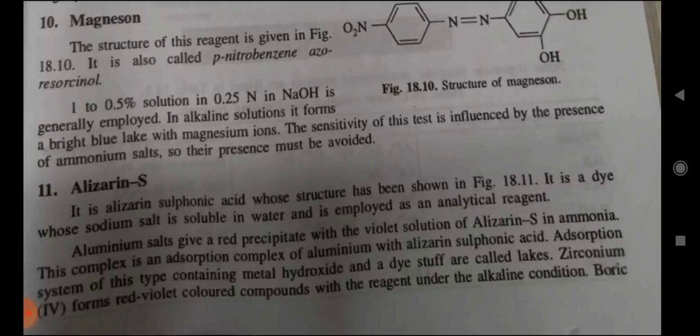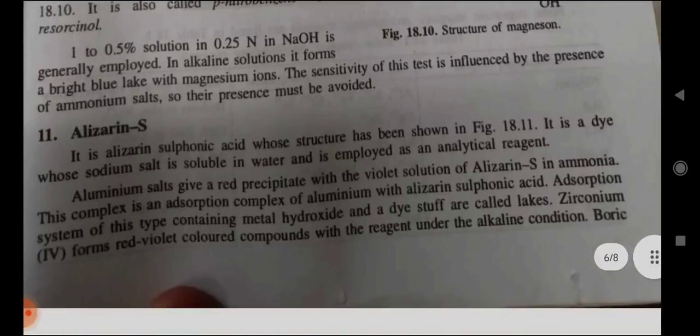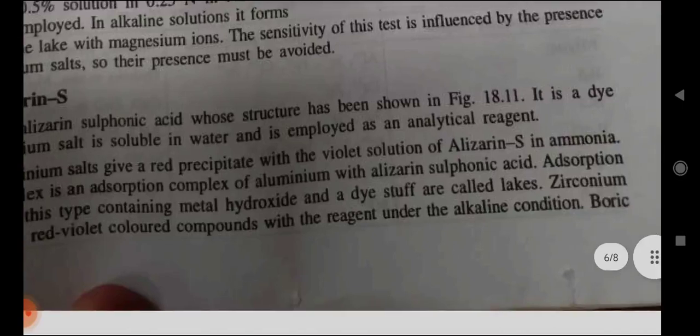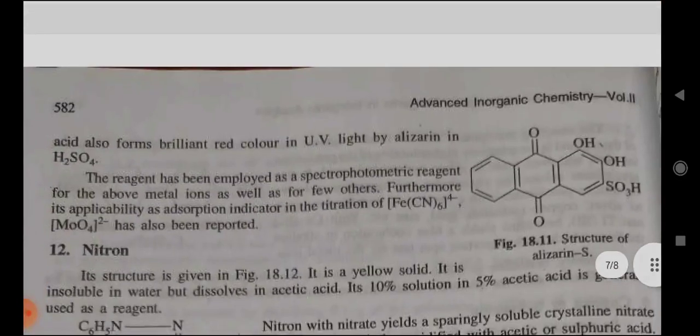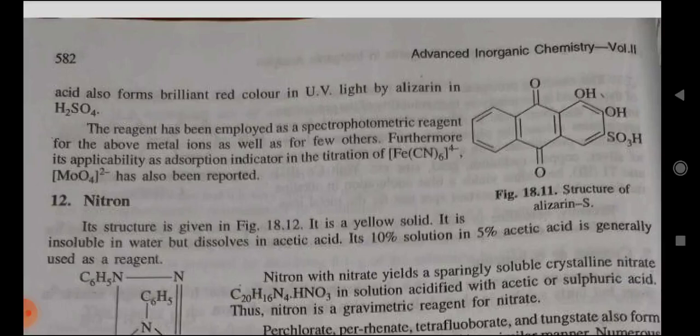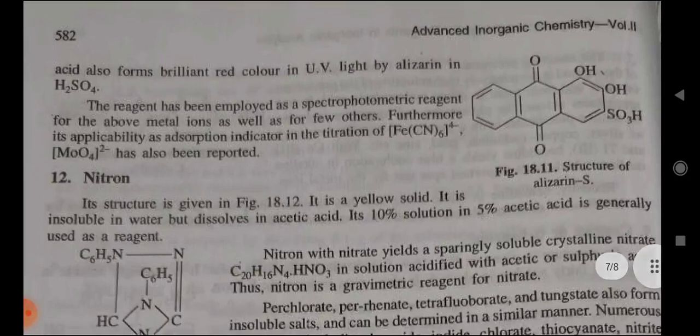Eleventh — Alizarin S: it is alizarin sulfonic acid, whose structure has been shown in figure 18.11. It is a dye whose sodium salt is soluble in water, and it is employed as an analytical reagent. Aluminium salts give a red precipitate with the boiled solution of alizarin S in ammonia. This complex is an adsorption complex of aluminium with alizarin sulfonic acid. Such adsorption systems containing metal hydroxide and a dye are called lakes. Zirconium(IV) forms a red-violet colored compound with the reagent under alkaline conditions. Boric acid also forms a brilliant red color in UV light using alizarin in H2SO4. The reagent has been employed as a spectrophotometric reagent for above-mentioned metal ions, and it is also applicable as an adsorption indicator. The determination of [Fe(CN)6]4- and MoO42- has also been reported.